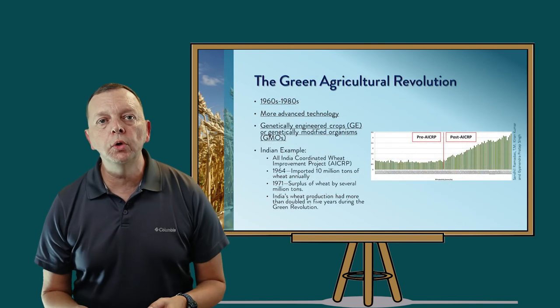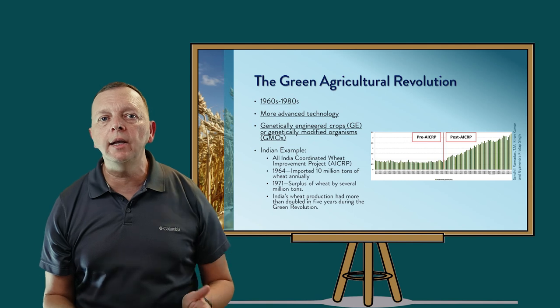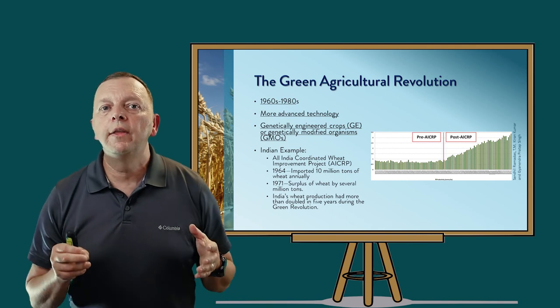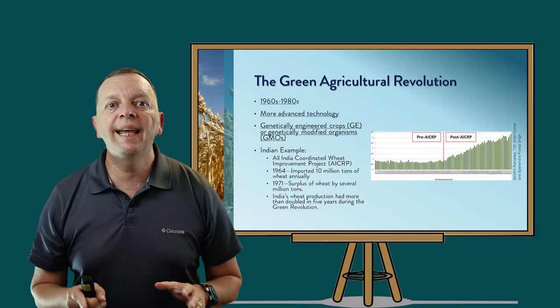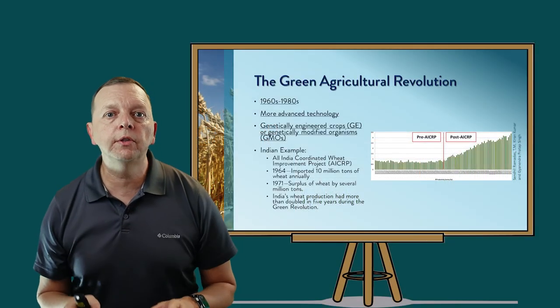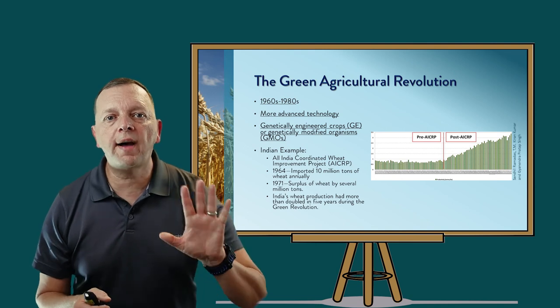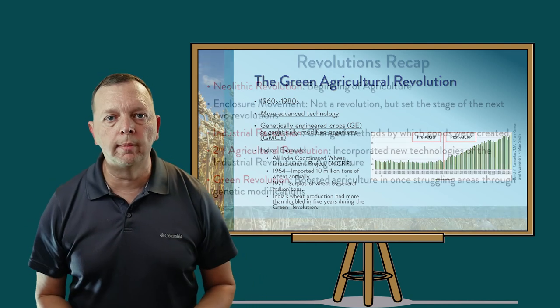The Green Revolution continued from the 1960s to the 1980s, really focusing on genetically modified crops. For example, in 1964 India had to import over 10 million tons of wheat every year. But in just seven years, India became an exporter of millions of tons of wheat. In fact, in just five years, India's wheat production more than doubled.